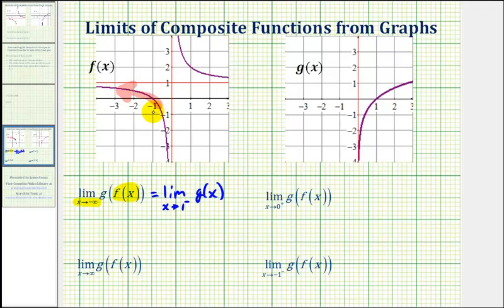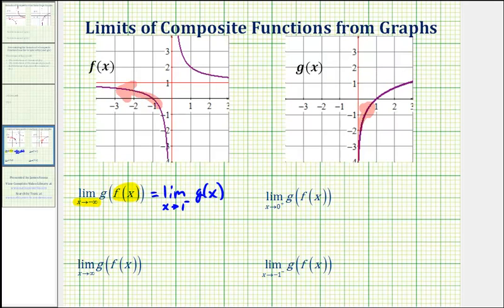Since the function values of f are approaching positive one from values that are less than one, these become the inputs into the outer function g, so our limit becomes the limit as x approaches positive one from the negative side of g of x. Looking at the graph of g of x, as we approach positive one from the negative side, we can see we're approaching the function value of zero, and therefore the limit of our composite function is zero.